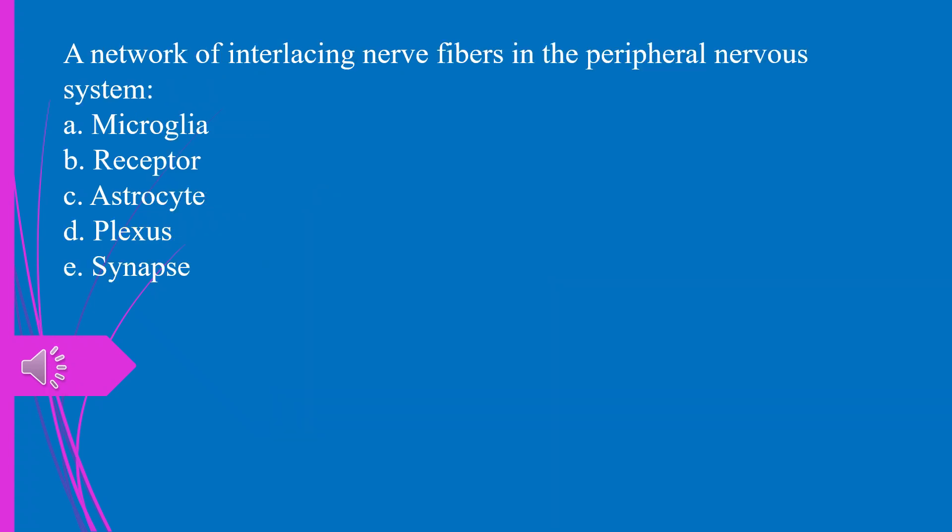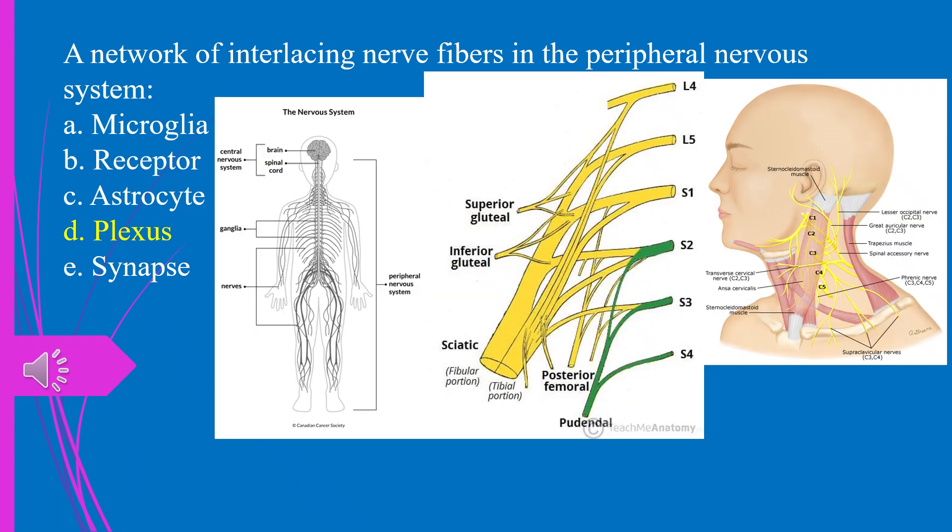A network of interlacing nerve fibers in the peripheral nervous system. A. Microglia. B. Receptor. C. Astrocyte. D. Plexus. E. Synapse. The answer is D. Plexus. For example, the brachial plexus in the cervical area, or the sacral plexus in the pelvic area.